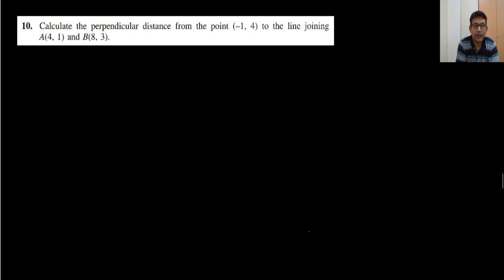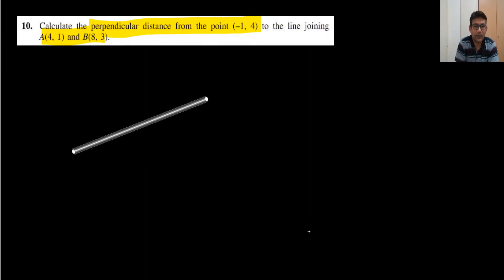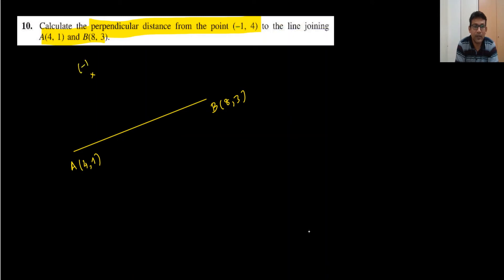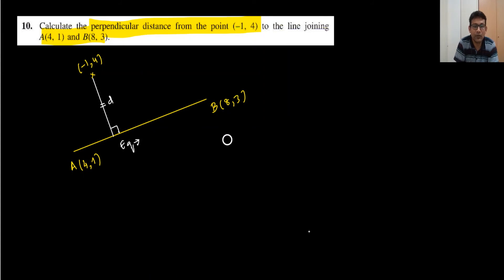Question number 10: calculate the perpendicular distance from a point to the line joining two other points. So we draw a diagram — we have two points A and B, where A is (4, 1) and B is (8, 3), and there is an external point at (minus 1, 4). When we join the external point to the line AB, the perpendicular distance is always 90 degrees. To use the formula, we first need the equation of the line AB.